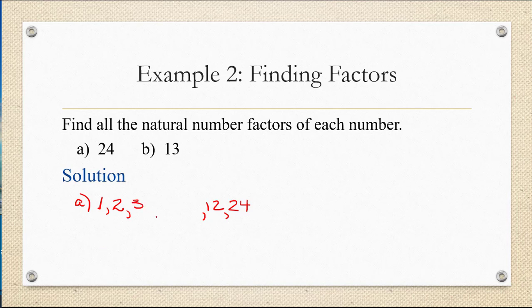And then does 3 go into 24? Yes, it goes in 8 times. And then does 4 go into 24? Yes, it goes in 6 times. Does 5 go into 24? No. And then once we reach 6 there's no need to check anymore. We know we have the whole list once you work your way up to the larger factor, the smallest of the larger factors.